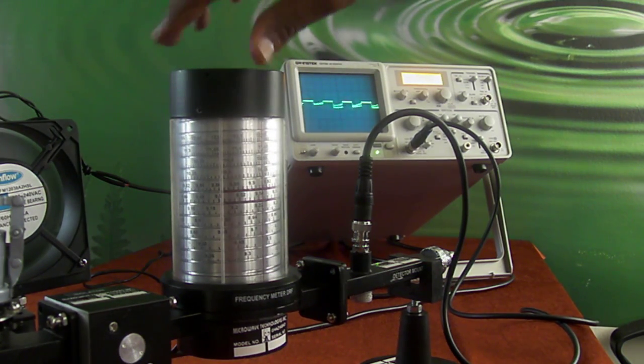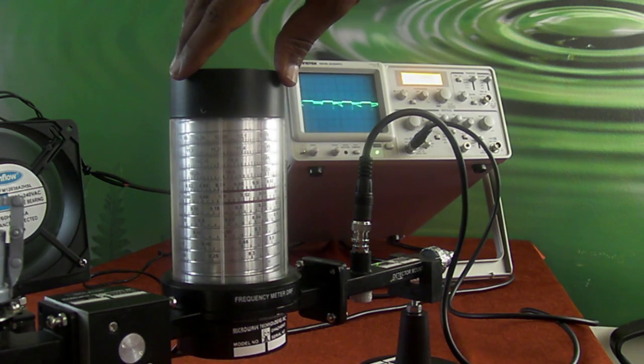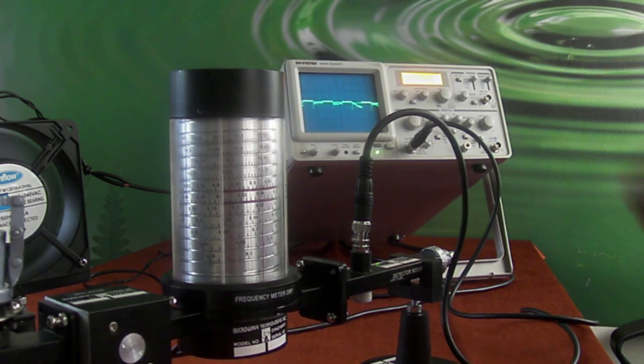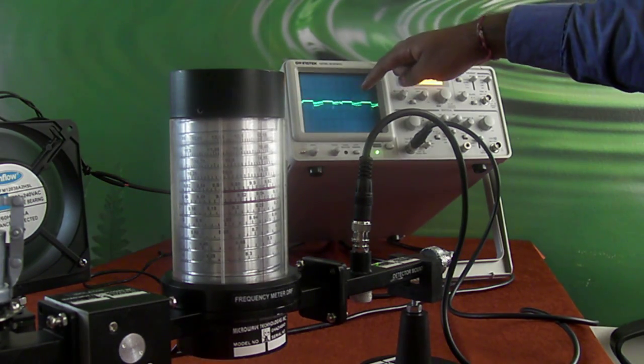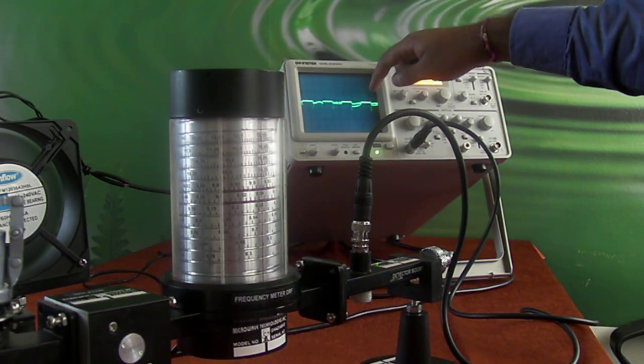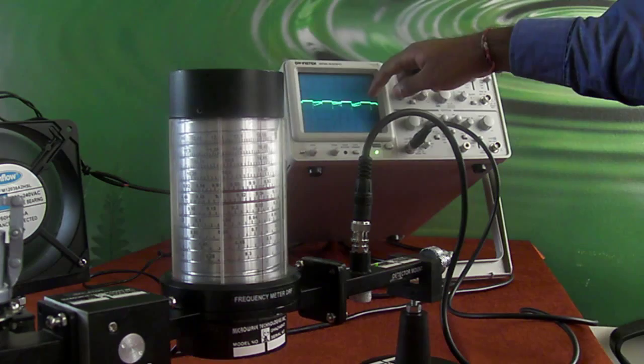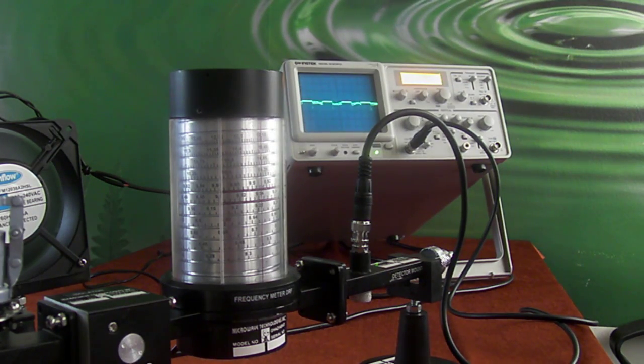If you move this frequency meter, then you can observe that the output wave, which initially was a square wave, is now down to zero. That means we are not getting the complete square wave.